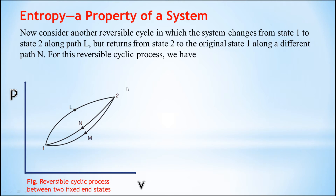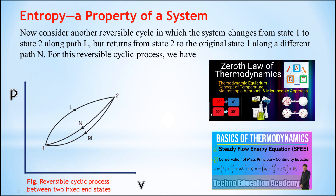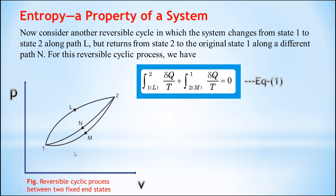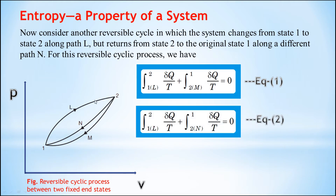Similarly, now we consider the reversible process in which the system changes from state 1 to state 2 along the same path L, but returns from state 2 to the original state 1 along a different path N. So in the first case the return path is M, but here we are considering the return path as N instead of M. Similarly here we can also apply the Clausius theorem for the reversible process.